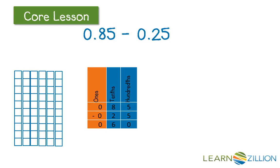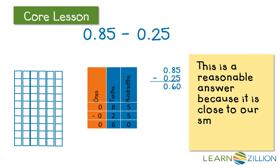You can say either 6 tenths or 60 hundredths as your answer. You'll often see it written as you see it there on the right. This is a reasonable answer because it's close to our smart estimate of 50 hundredths.